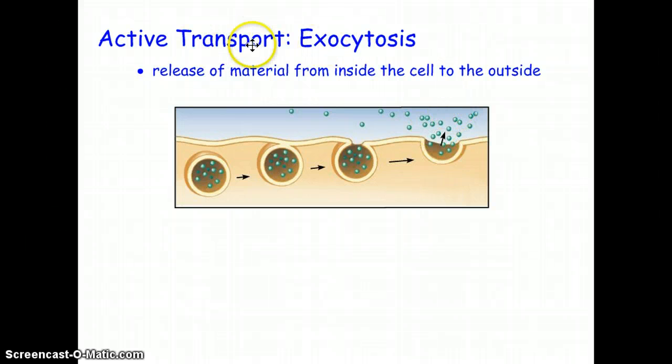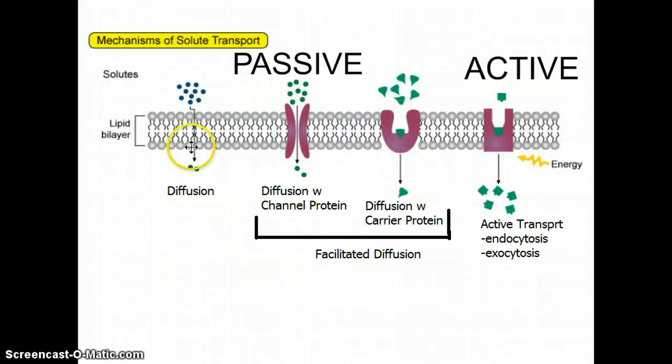So those are methods of active transport because they could go against the grain. There could be lots of molecules already out here, but you still want to continue to get more out there. You don't want any dead, useless material inside the cell that you don't need to be using. So if you're going against the grain, it's active transport, requires ATP. If you're going with the grain, with the concentration gradient, high concentration to low concentration like all of these three, it doesn't require any energy. It's just that it's either going to be simple diffusion if you're a fat, or if you're not a fat, you need to use facilitated diffusion and use a protein, either a channel or a carrier protein.